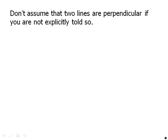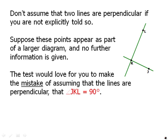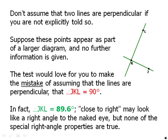Don't assume that two lines are perpendicular if you are not explicitly told so. This is often a trap. Suppose these points appear as part of a larger diagram and no further information is given. Certainly looks like those could be at a right angle. And that's a very tempting thing to assume. The test would love for you to make the mistake of assuming that the lines are perpendicular and that the angle equals exactly 90 degrees. In fact, it doesn't. I've drawn this so that that angle there is an angle of 89.6 degrees. So it's close to being a right angle. And it may look like a right angle to the naked eye, but none of the special right angle properties are true. None of the special right angle properties are true if the angle is close to 90, but not exactly 90. Very important. So you cannot assume that two lines are perpendicular unless you have some sort of justification for doing so.